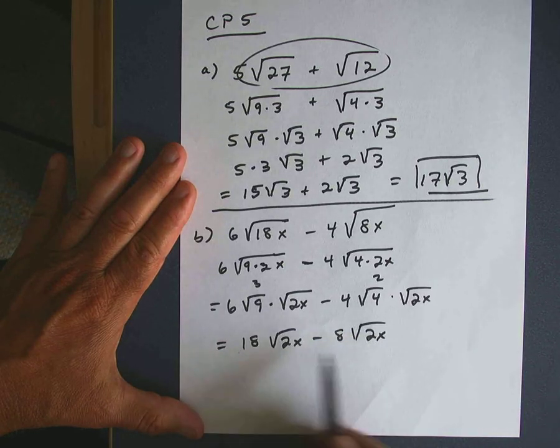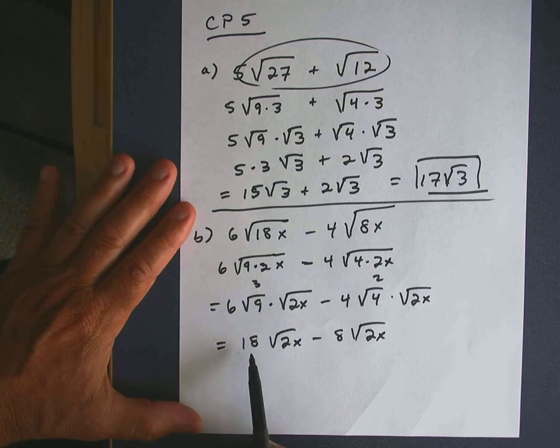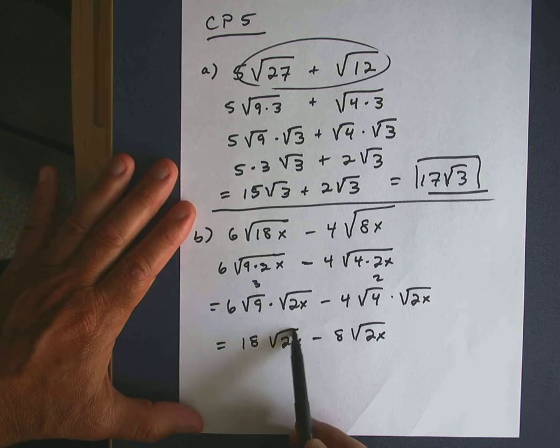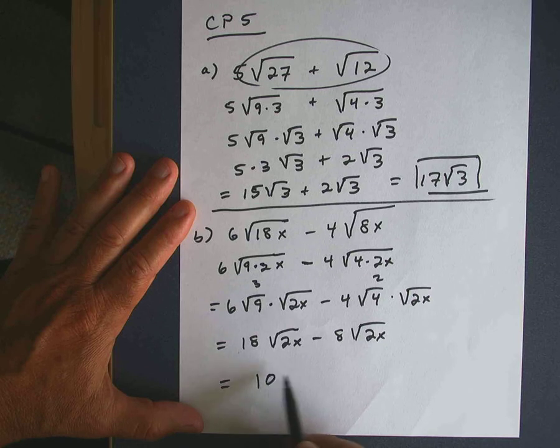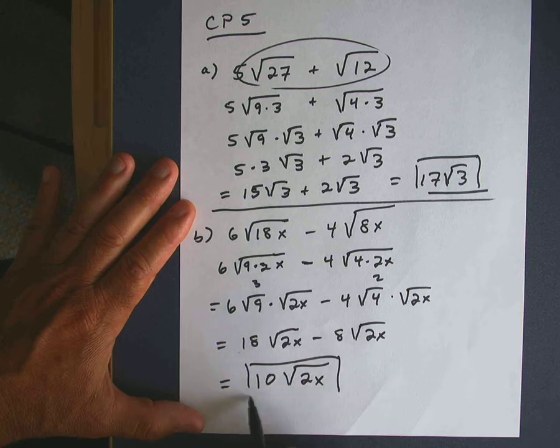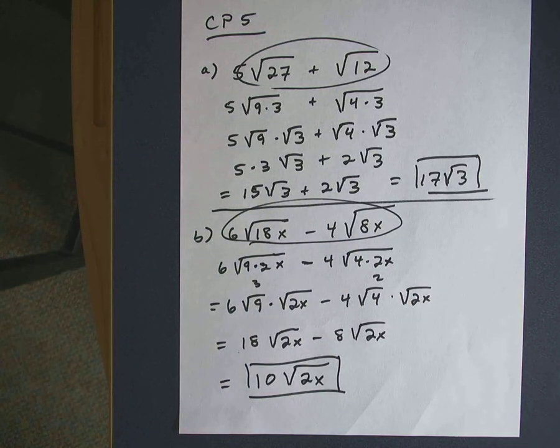We have like terms here, so similar to what we did in checkpoint 4, we could combine them. We have 18 times the square root of 2x, and then you have minus 8 times the square root of 2x. So 18 minus 8 is 10. This will simplify to 10 times the square root of 2x. So again, we were able to simplify substantially from the original expression.